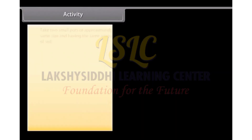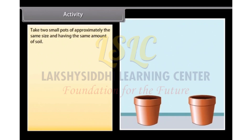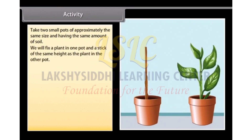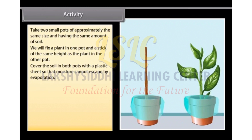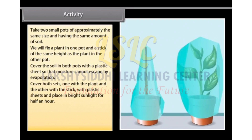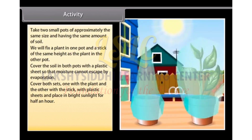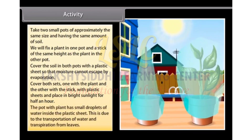Activity: Take two small pots of approximately the same size and having the same amount of soil. Fix a plant in one pot and a stick of the same height as the plant in the other pot. Cover the soil in both pots with a plastic sheet so that moisture cannot escape by evaporation. Cover both sets — one with the plant and the other with the stick — with plastic sheets and place in bright sunlight for half an hour. The pot with the plant has small droplets of water inside the plastic sheet, which is due to the transportation of water and transpiration from leaves.